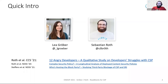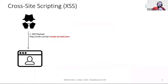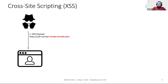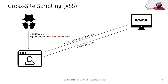Let's get started with what CSP actually is. One of the most prevalent security vulnerabilities in websites is cross-site scripting. To perform such an attack, an attacker lures a victim's browser to execute malicious JavaScript. In the example here, you can see that the victim's browser is lured into issuing a GET request to a vulnerable service, and this request contains a script tag that loads malicious script.